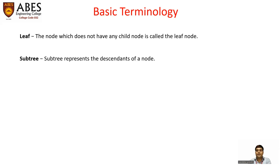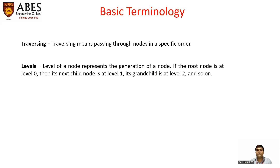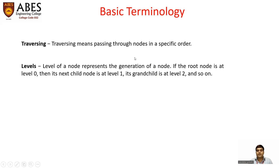Subtree represents a descendant of a node. Traversing means passing through nodes in a specific order to reach a particular node, and we have three types: pre-order, in-order, and post-order. Traversing consists of these three types of order.